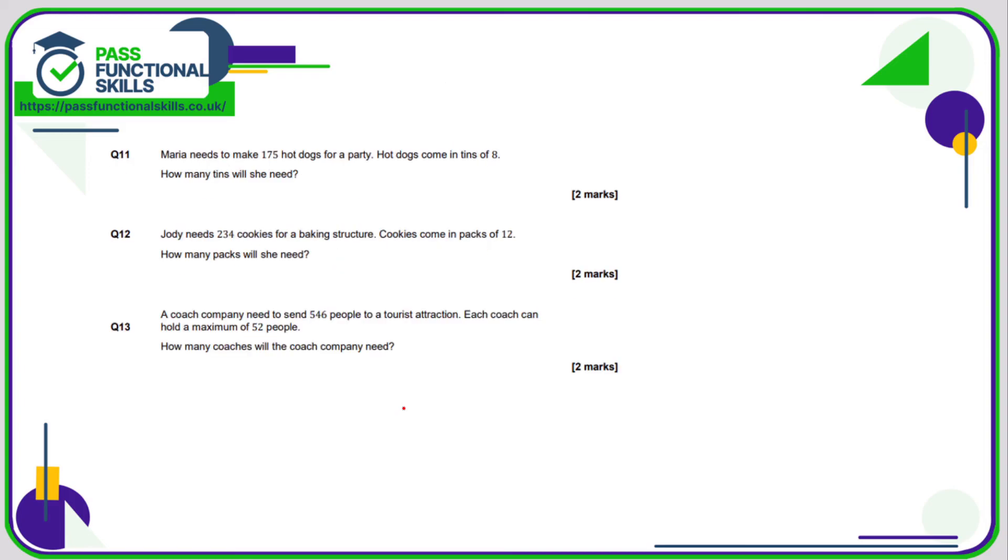Question number 11, we're now allowed to use a calculator, so it's just 175 divided by eight and that works out as 21.875 packs. Or you can't buy 0.875 packs, so that has to be rounded to 22 packs.